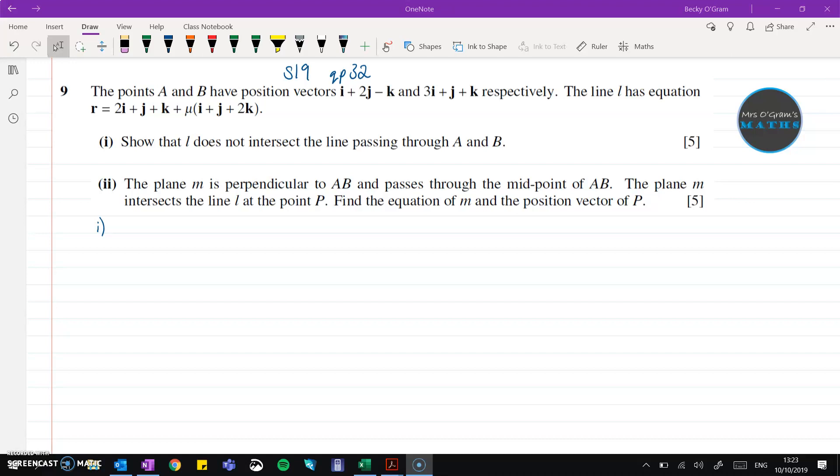So first of all we need to find the line AB. We can get the direction of that line from doing OB minus OA, and that gives us (2, -1, 2). We can pop that into an equation for the line that goes through A and B by placing a point on the line. In this case I've used A, you could also use B. Pop A in and then go in multiples of the direction vector, and that gives us the equation of the line AB.